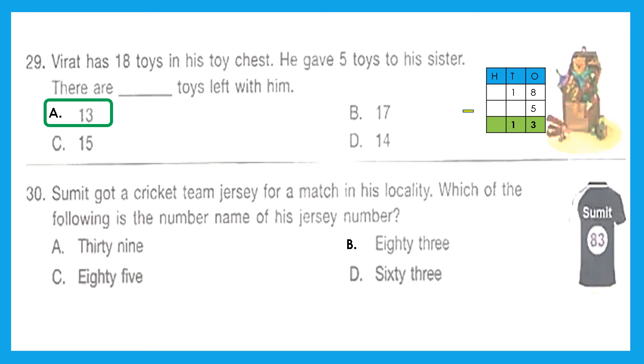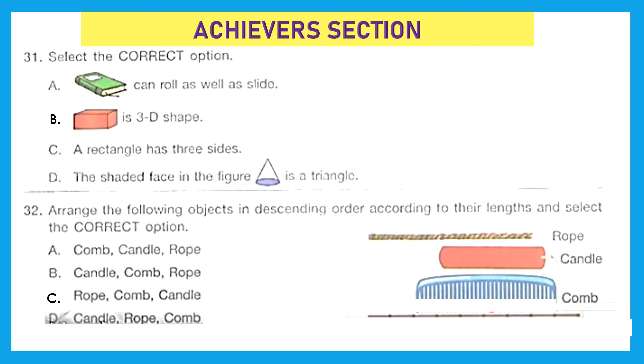Question 30: Sumit got a cricket team jersey for a match in his locality. Which of the following is the number name of his jersey number? It is 83. Option B. Now let's move to the achievers section. Question 31: Select the correct option. A: Book can roll as well as slide—no, that is incorrect because it cannot roll. It can slide because it has a flat surface but not a rolling surface. B: Kind of a brick is a 3D shape—absolutely correct. We got our correct option, but let's see C and D also. C: A rectangle has three sides—no, it has four sides. D: The shaded face in the figure is a triangle—no, it's not a triangle, it's a circle. So this is also incorrect, or you can say it's oval. It is also incorrect. So option B is the only correct answer.